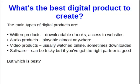The main types are written products — things like downloadable ebooks, access to websites, links, that kind of thing. Audio products, which you can play almost anywhere — in a car, while you're commuting, wherever. Video products, usually watched online nowadays but sometimes downloaded. And then software, which can be tricky, but if you've got the right partner or the right frame of mind, they're good.